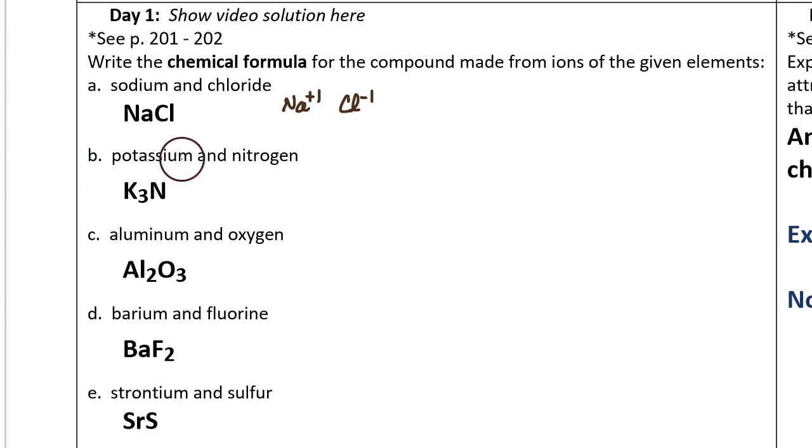Question B: Potassium and nitrogen. This time the formula is K3N. Here's why. Potassium is in group one and makes positive one ions.